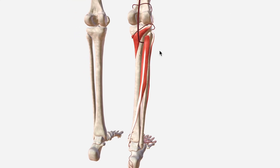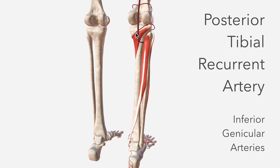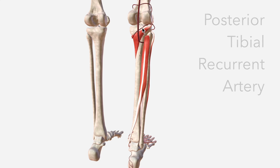Moving on to the branches of the anterior tibial: we start with the posterior tibial recurrent artery, which isn't present in all individuals — that's probably why it's missing from this model. It departs before the anterior tibial passes between the fibula and the tibia, then ascends to supply popliteus and anastomoses with the inferior genicular arteries.